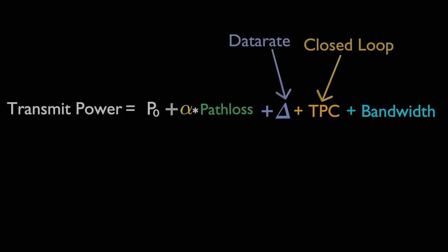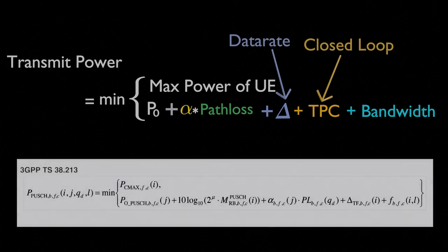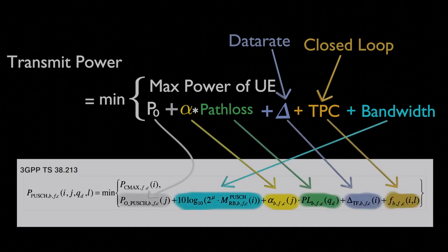Finally, we cap the transmit power with the max power of UE. Now, does this complicated equation from the 3GPP document make sense for you? I hope this video helps you to get a basic understanding of the power control algorithm in 5G. Thank you for watching.